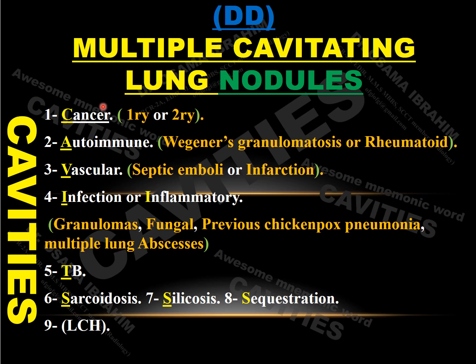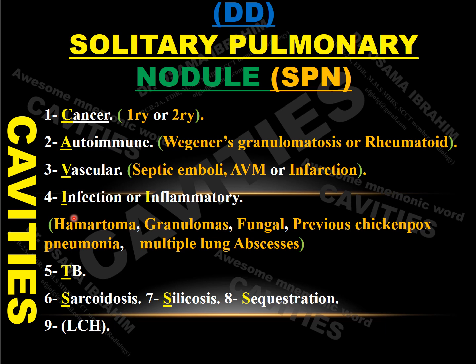Fortunately, the same mnemonic word CAVITIES with the same differential diagnoses can be used for multiple cavitating lung nodules, and also as a differential diagnosis for solitary pulmonary nodules (SPN). So if I remember the word CAVITIES and which letter represents which disease, I can recall all the differential diagnoses of multiple pulmonary nodules, multiple cavitating lung lesions, and solitary pulmonary nodules.